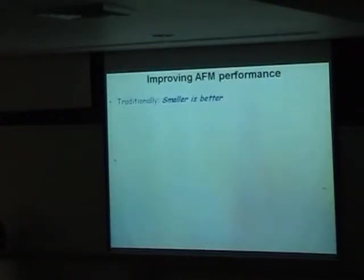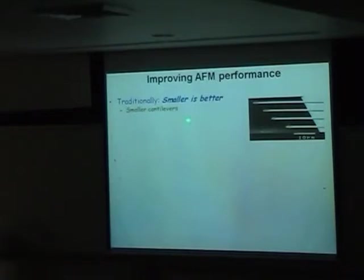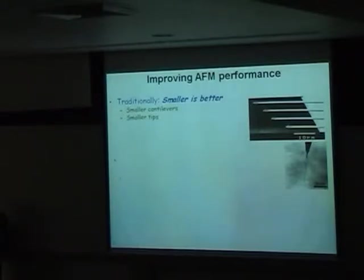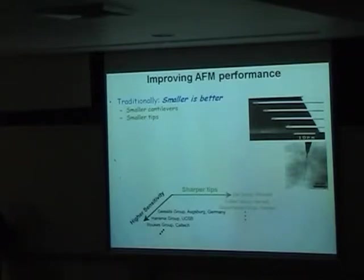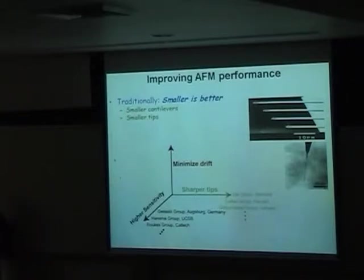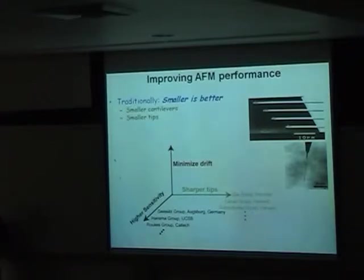The traditional ways to improve AFM performance are smaller cantilevers for higher signal-to-noise, and sharper tips - analogous to shrinking down your point spread function in optics. There are leading groups around the world pursuing sharper tips and higher sensitivity. What I'd like to tell you about today is an orthogonal axis: minimizing drift. I view these as synergistic - minimizing drift, getting sharper tips, and higher sensitivity all add together for smaller features with higher spatial and temporal resolution.